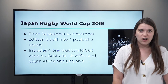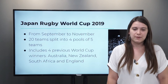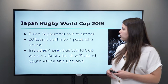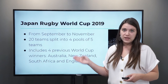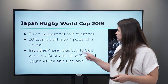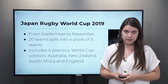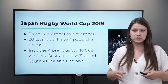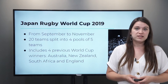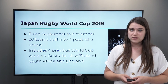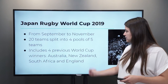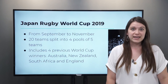Now let's talk about the World Cup that is coming up in Japan. This is going from September to November. It starts with 20 teams and is split into four pools of five teams. A pool is kind of like a group of teams. It includes the four previous World Cup winners, which are Australia, New Zealand, South Africa, and England.